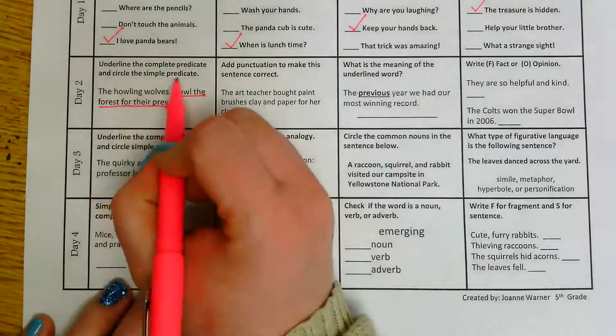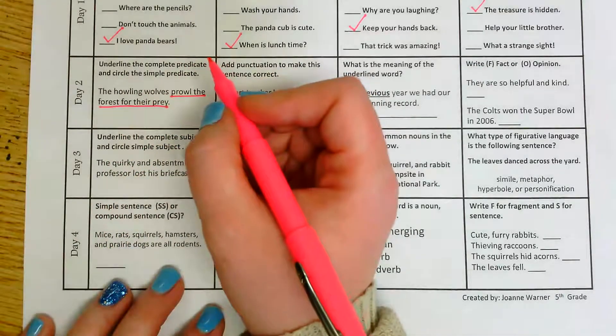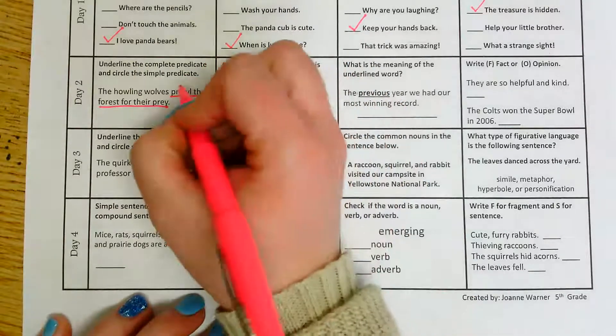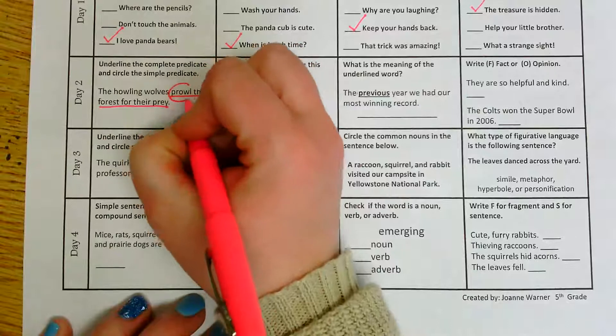Now I need to circle the simple predicate. So I just want the one word that's telling me the action taking place. So in this case, the word that we would circle would be prowl.